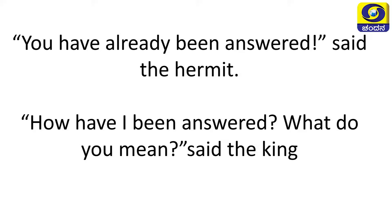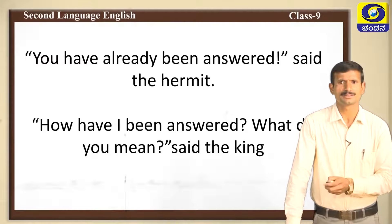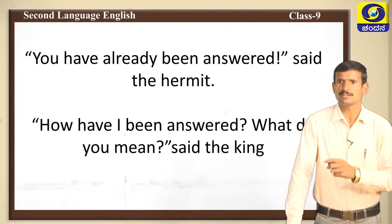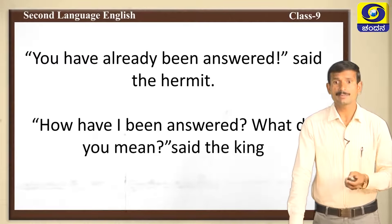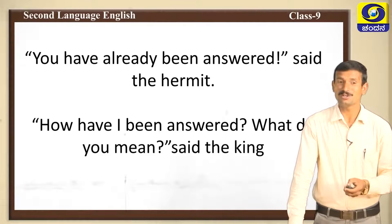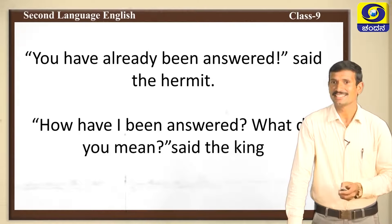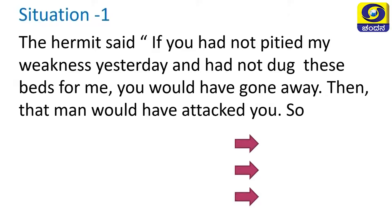'How have I been answered? What do you mean?' said the king. He couldn't realize anything. Now the hermit explains everything. In the first situation, the hermit said: 'If you had not pitied my weakness yesterday and had not dug these beds for me, you would have gone away — then that man would have attacked you.'